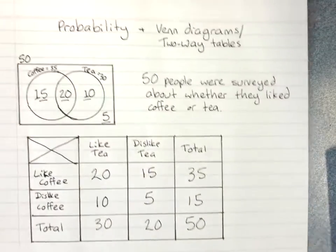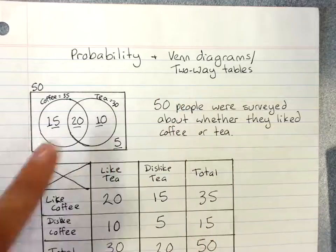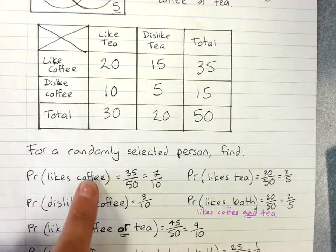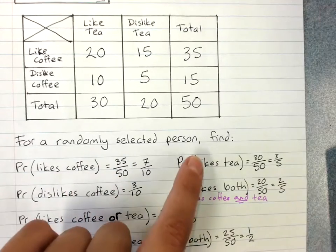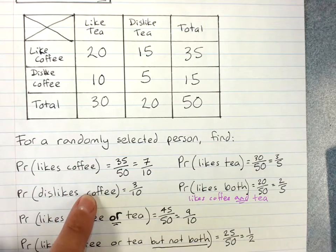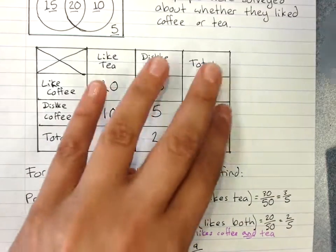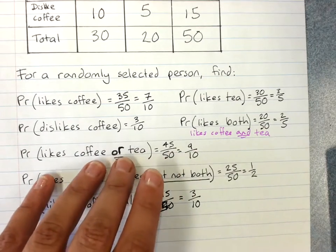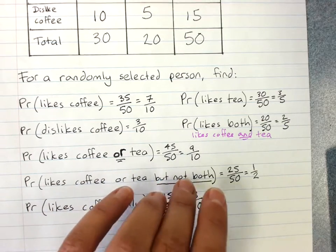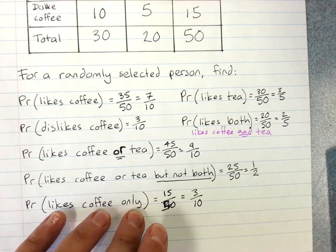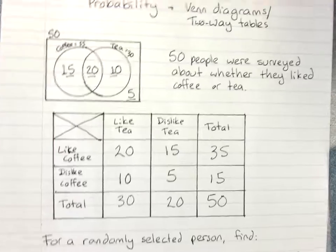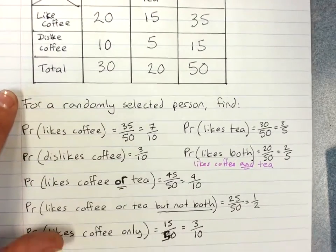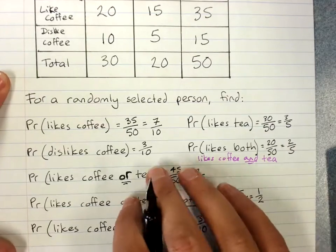So that's probability with a Venn diagram and a two-way table. For just one sort of option like tea or coffee or doesn't like coffee, sometimes the two-way table is easiest. For the AND and the OR and the OR but not both and even the only questions, sometimes your Venn diagram is more useful. It's up to you. Get this language really correct.